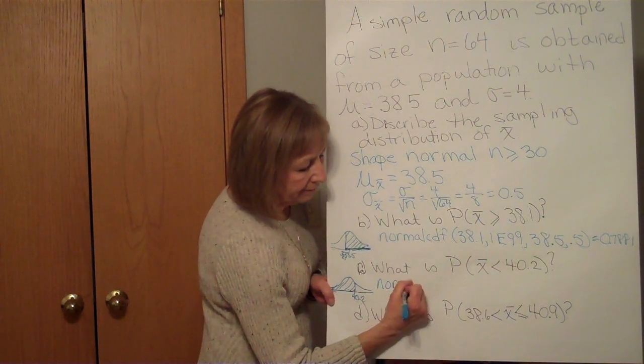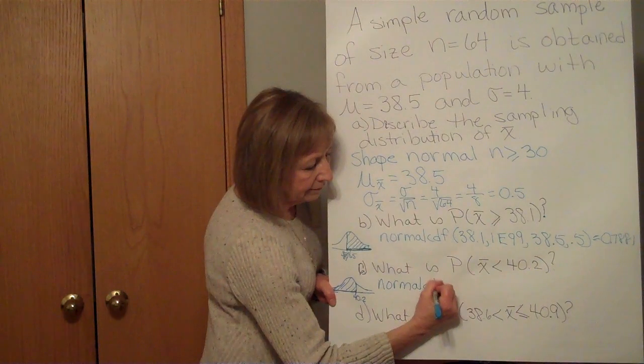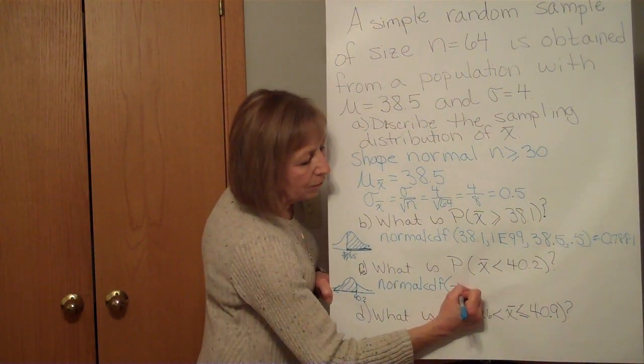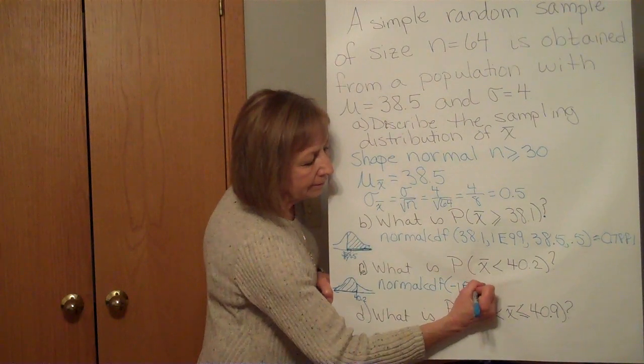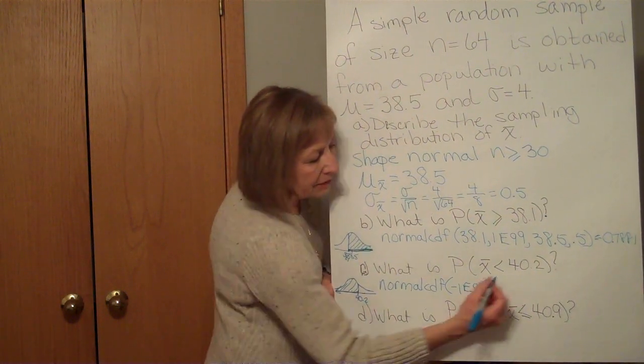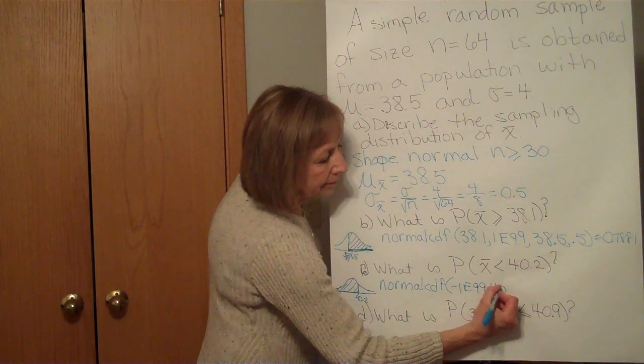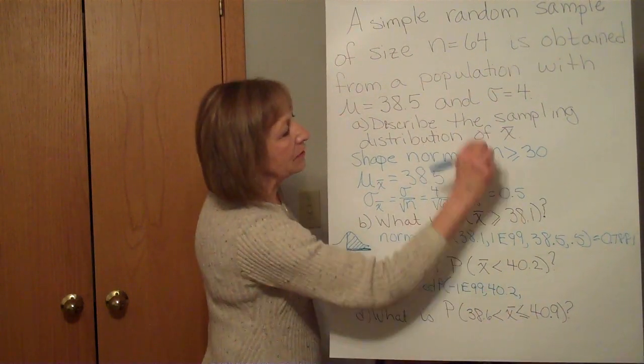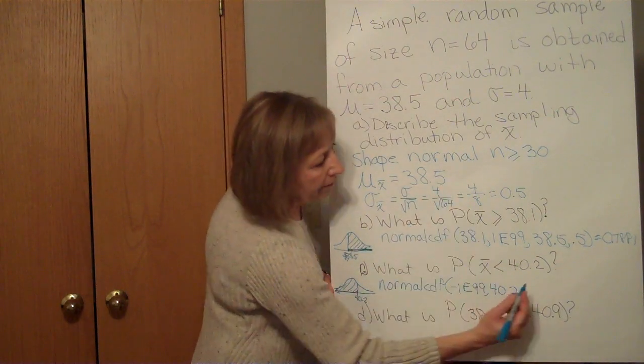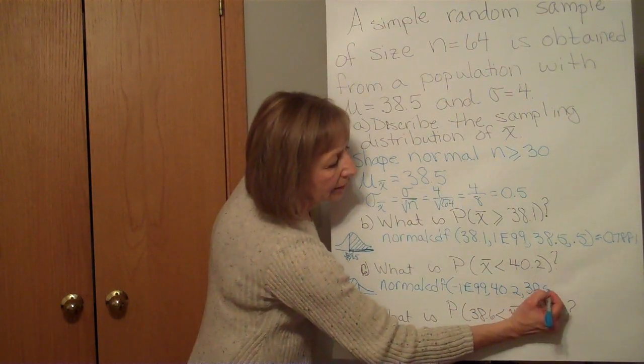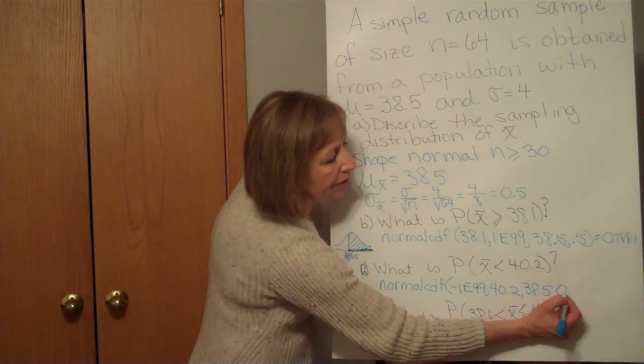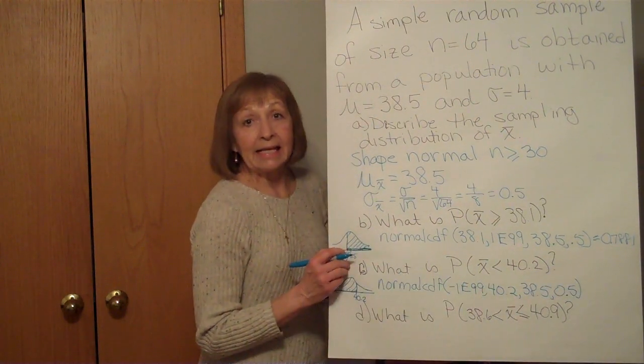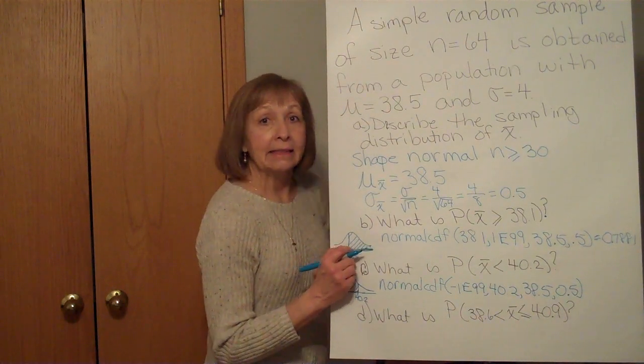So we have normalcdf, low is -1E99, high is 40.2, mean again is 38.5, and my standard deviation of the sample means is 0.5. And for that I get 0.9997.